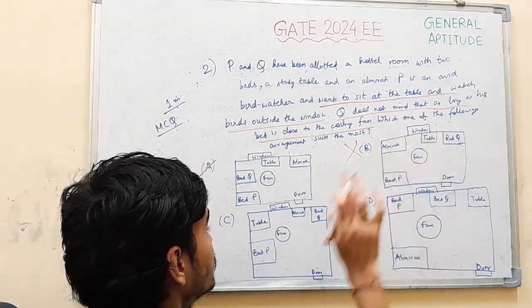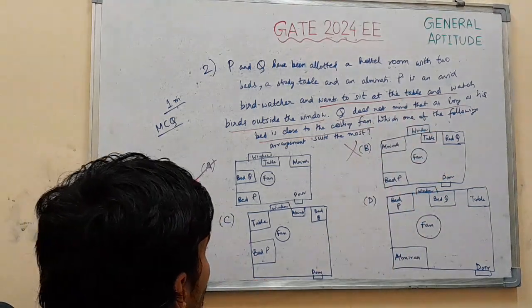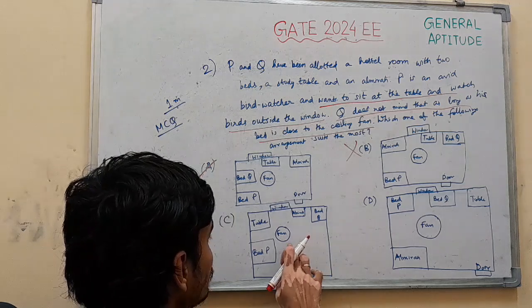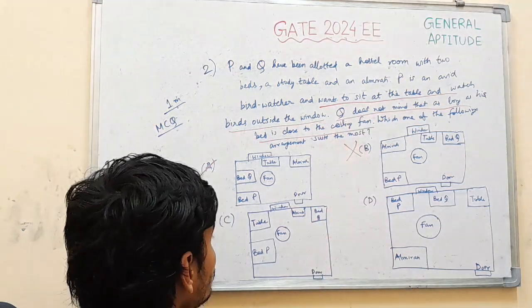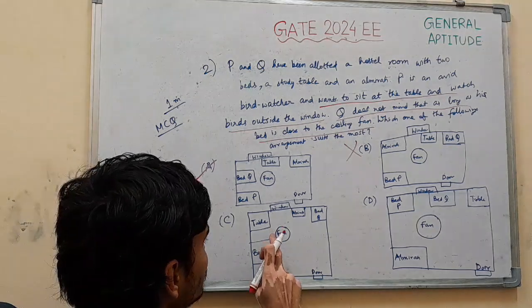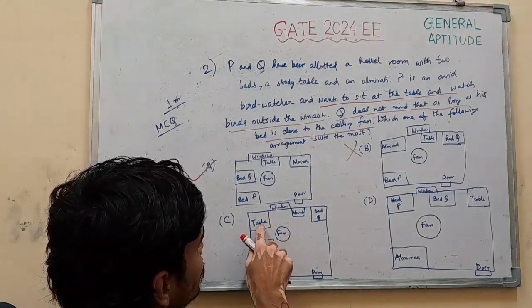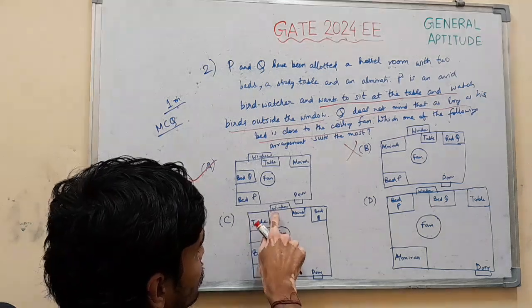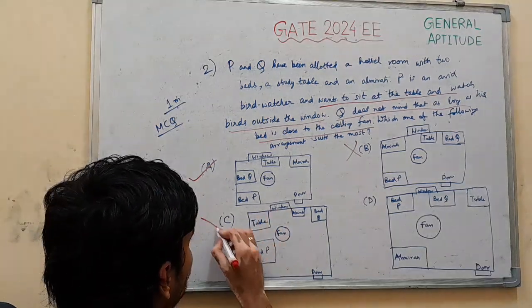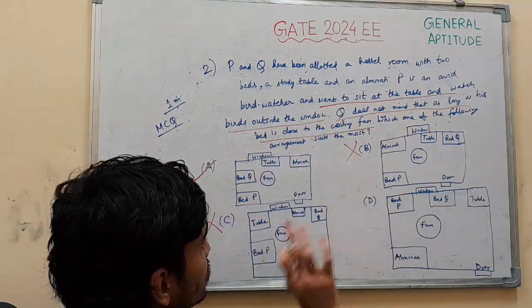Second criterion is not satisfied. In option C, fan is far from the bed of Q. So second criterion is not satisfied. And first criterion is also not satisfied because sitting on the table you can't watch birds in the outside window. It is away from the table. So both the conditions are not satisfied.